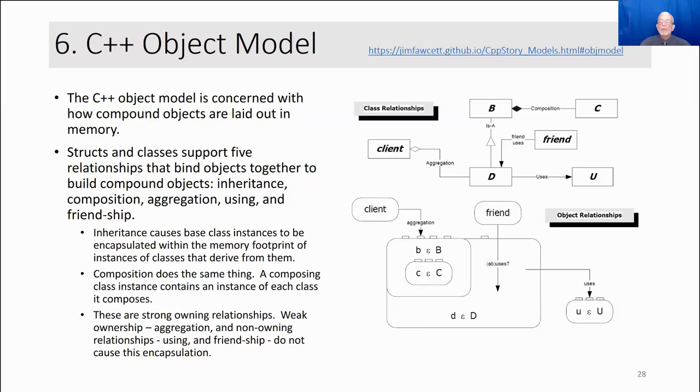So all of these relationships, composition, inheritance, aggregation, using, and friendship, those five relationships are available for all classes.